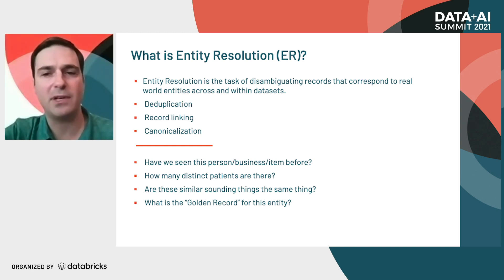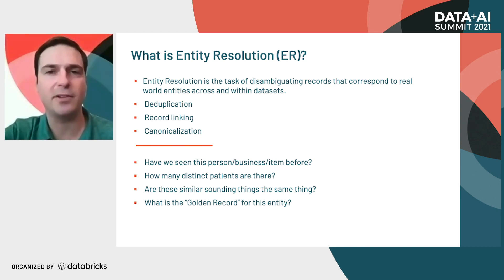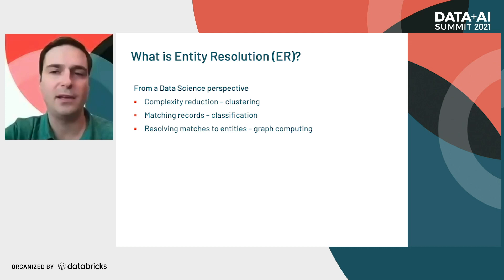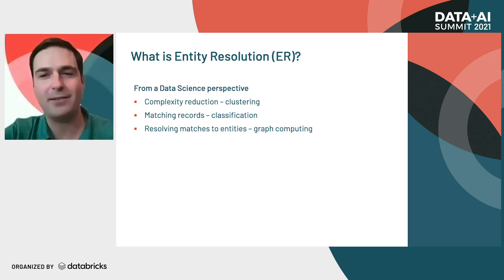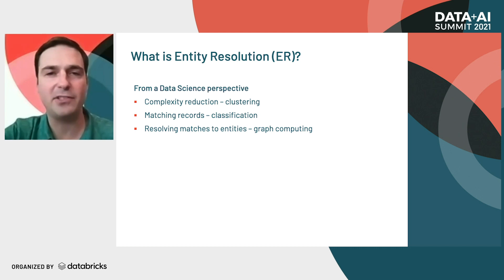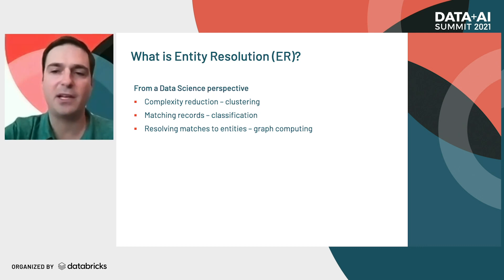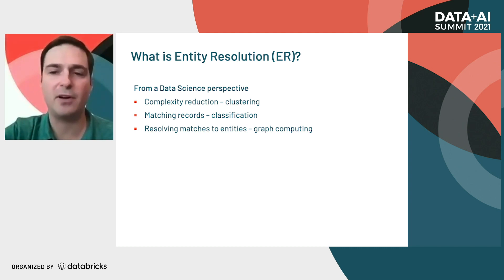I also like defining it in terms of questions. If we have a dataset: have we seen this thing before? How many distinct things are there? Is this record and this other record actually referring to the same thing? When representing our things, what sort of standard form should we give them? In order to answer all these questions, we get to do some cool data science. As a quick outline, we need to reduce the complexity of the problem because this is not a linearly scaling problem. We'll have to use natural language processing and a method called blocking. We're going to build a classification model to predict whether one record matches another record. And finally, because we want the final output to be groups of records and not just pairs of matches, we'll have to use graph computing to resolve all the matches into related entities.